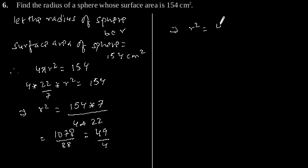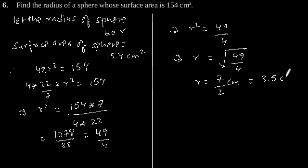The value of r will be √(49/4), which gives r = 7/2 cm or 3.5 cm. Therefore, the radius of a sphere whose surface area is 154 cm² is 3.5 cm.